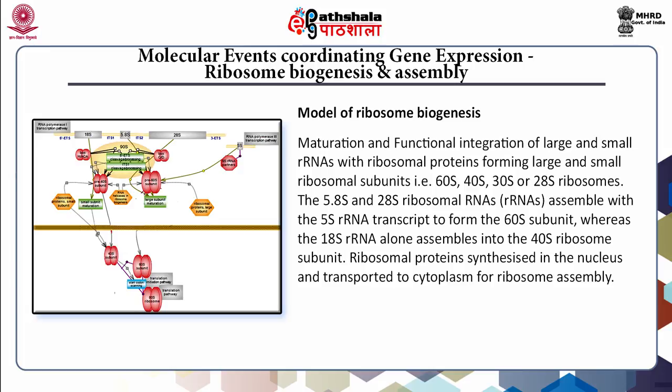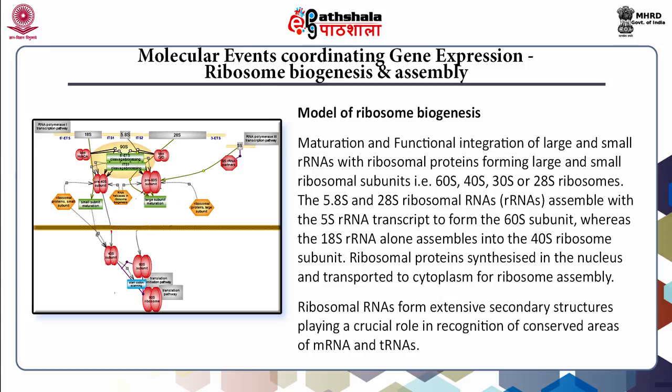For example, the 60S, 40S, 30S, and 28S ribosomal RNAs. Ribosomal proteins are synthesized in the cytoplasm and transported for nucleolar-based subassembly, with final assembly accomplished in the cytoplasm. Ribosomal RNAs form extensive secondary structures playing a crucial role in the recognition of conserved areas of messenger RNAs and transfer RNAs.